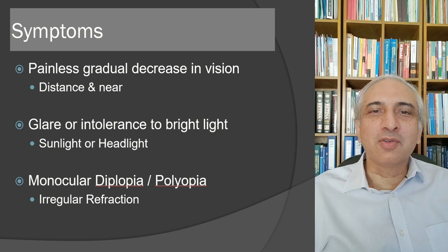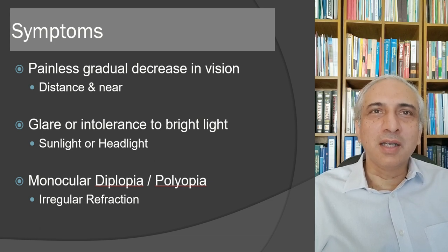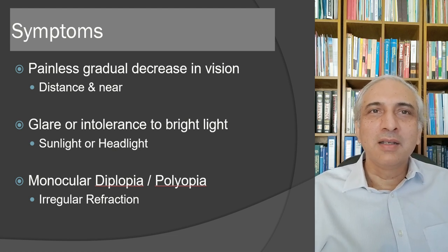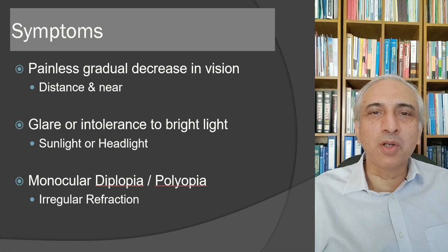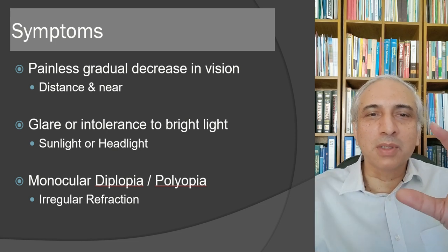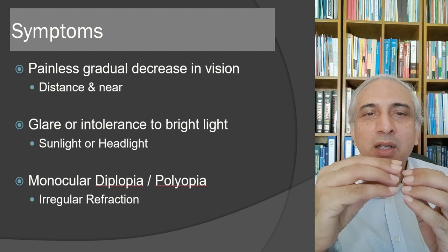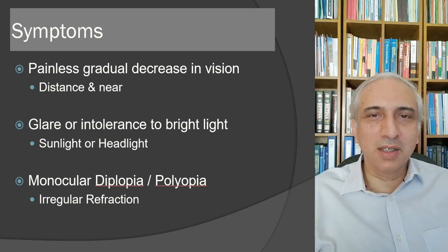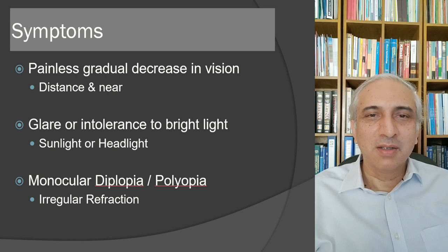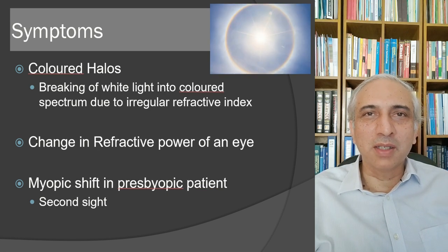Starting with symptoms — it is a painless, gradual decrease in vision for distance and near, with glare and intolerance to bright light, sunlight, or headlights. You can get monocular diplopia or polyopia because of irregular astigmatism, particularly when a posterior subcapsular cataract scatters light and causes multiple images.